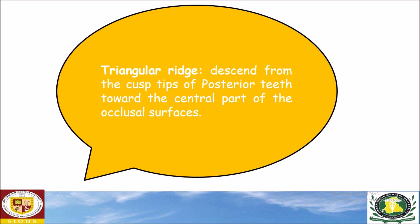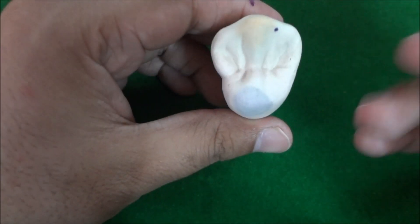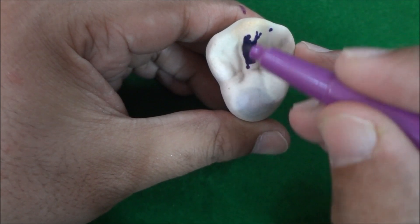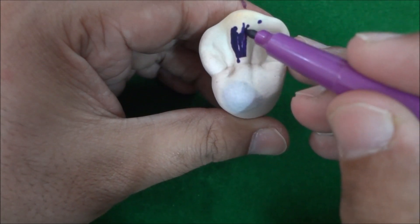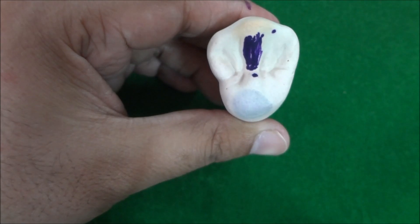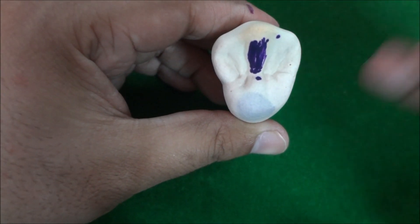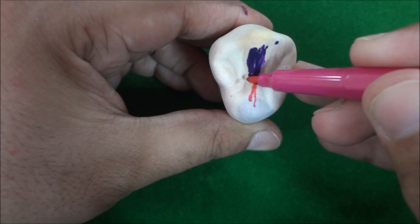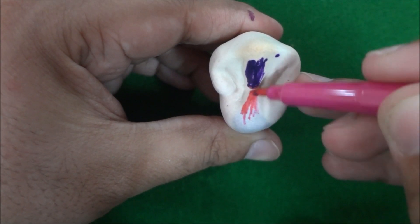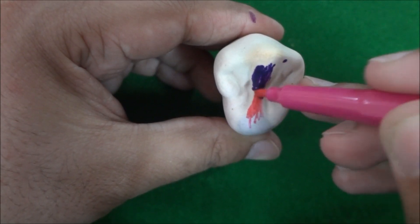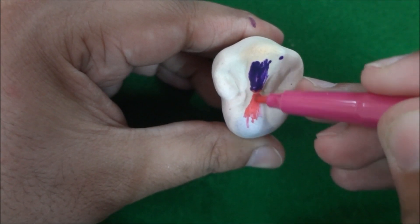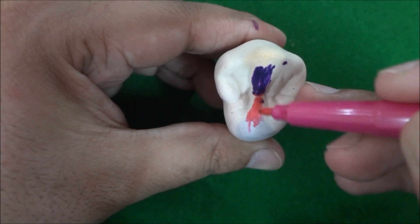Triangular ridges descend from the cusp tips of posterior teeth towards the central part of the occlusal surface. In this premolar, you can see a ridge descending from the buccal cusp tip towards the center of the occlusal surface, and another ridge descending from the palatal cusp towards the center. These ridges are named according to the cusp — this is the buccal triangular ridge and this is the palatal triangular ridge.